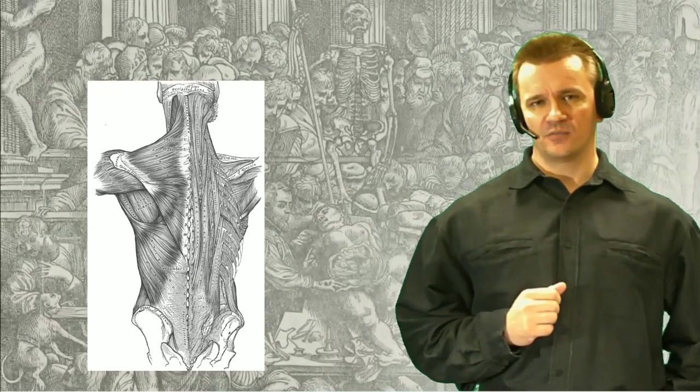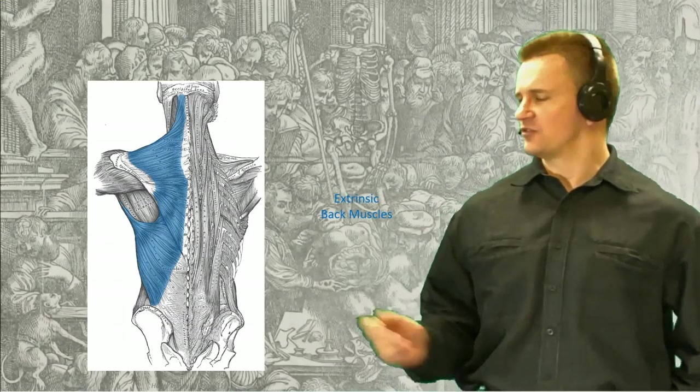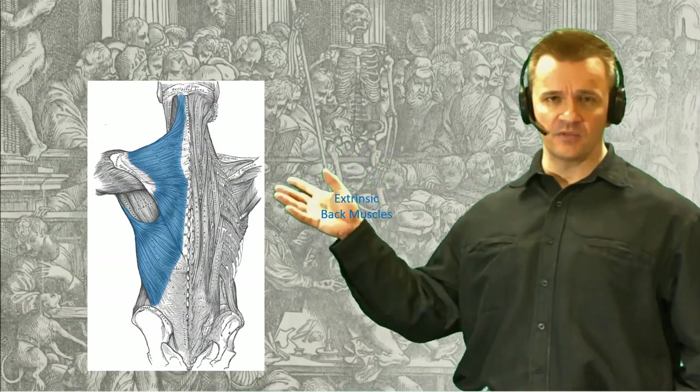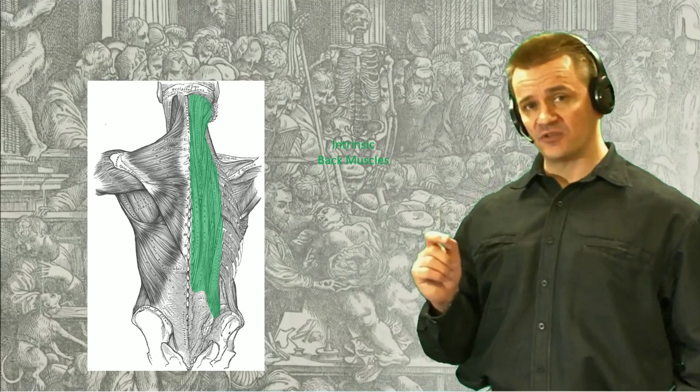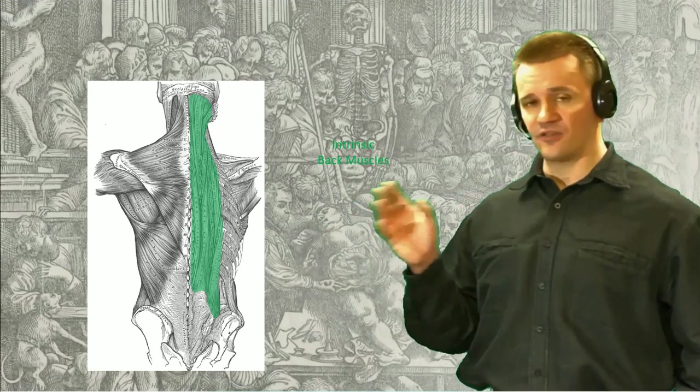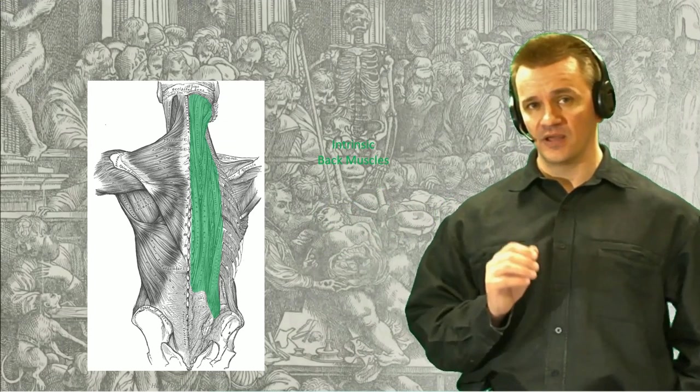Welcome back to the second and final session on the muscles of the back. In the previous session, we discussed the extrinsic muscles responsible for movement of the upper limb. We now turn our attention to the intrinsic muscles of the back. Remember, these are the muscles that both originate and insert on the vertebral column and then the ribs, which is what they specifically act upon.